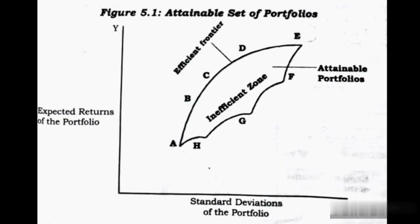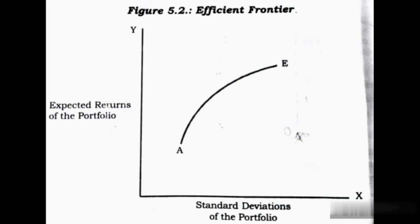The efficient portfolios are: portfolio A, portfolio B, portfolio C, portfolio D, and portfolio E. The northwest boundary of the opportunity set is called the efficient frontier. That is, A, B, C, D, and E are the efficient portfolios forming the efficient frontier.